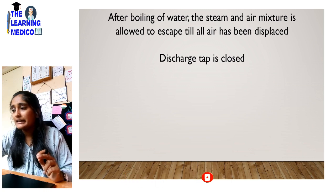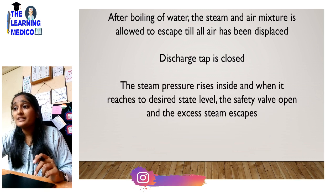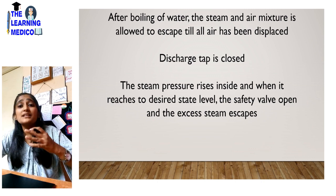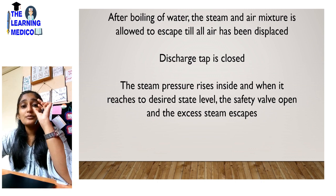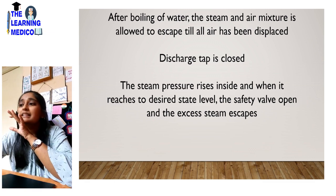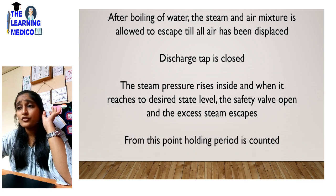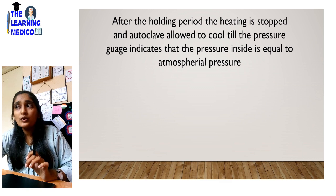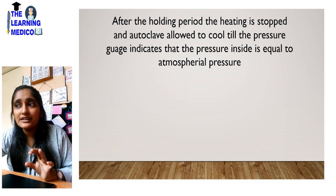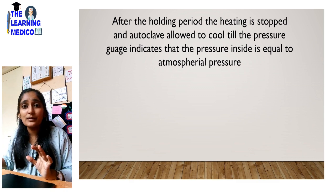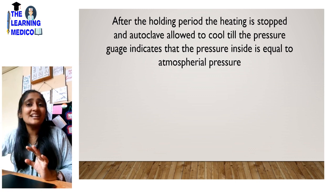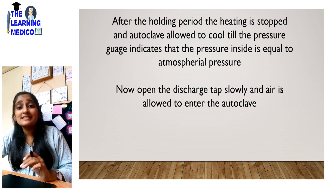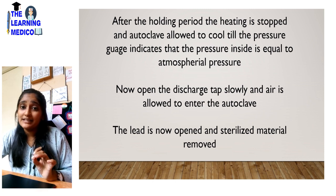We kept the discharge tap first open and now it is closed. The steam pressure rises inside and when it reaches the desired level, the safety valve opens and excess steam escapes. The pressure gauge will indicate the temperature has reached the required level, and then we open the safety valve. From this point, the holding period is counted. After the holding period, heating is stopped and the autoclave is allowed to cool until the pressure gauge indicates pressure inside equals atmospheric pressure. We do not open it prematurely — sudden cooling would break the instruments. The discharge tap is opened slowly, air is allowed to enter, the lid is opened, and the sterilized material is removed.